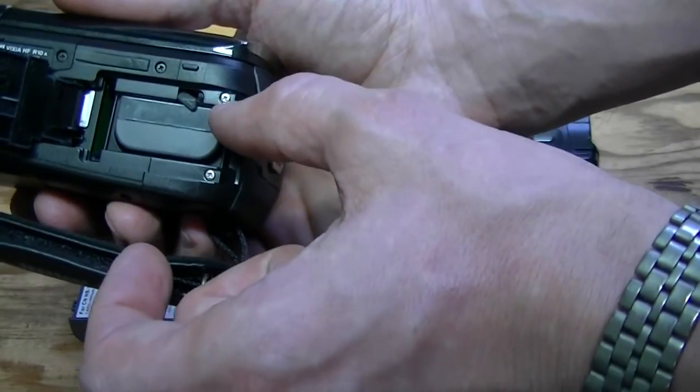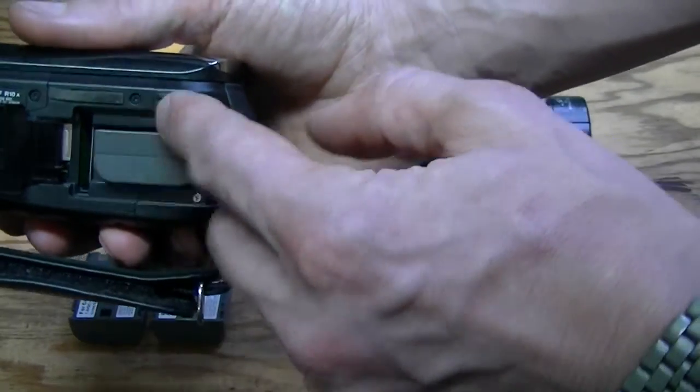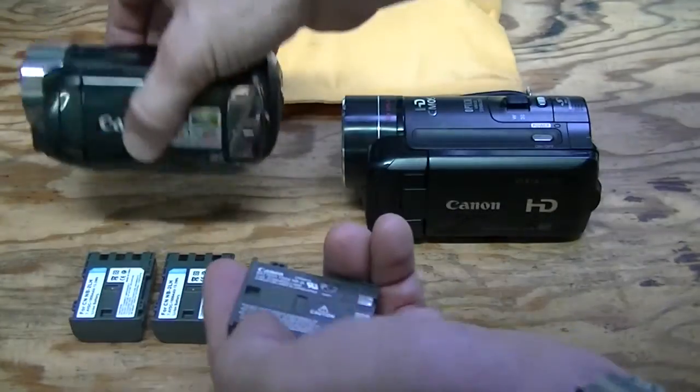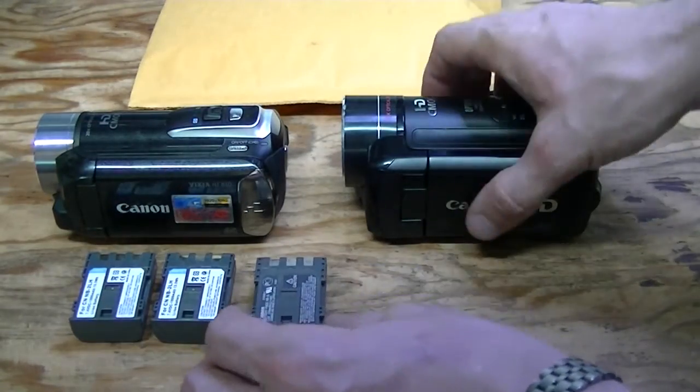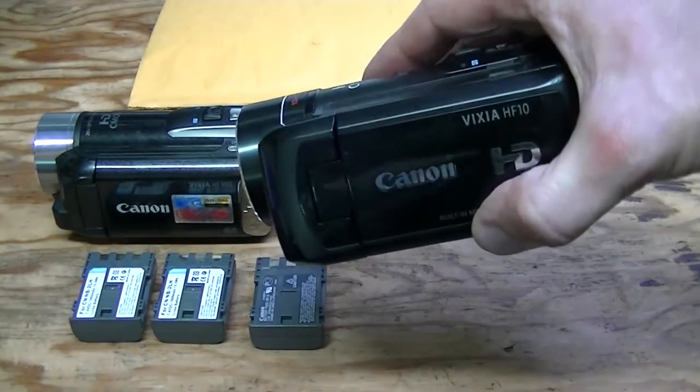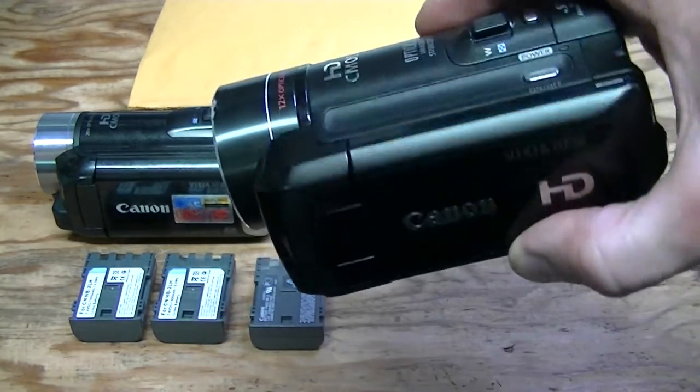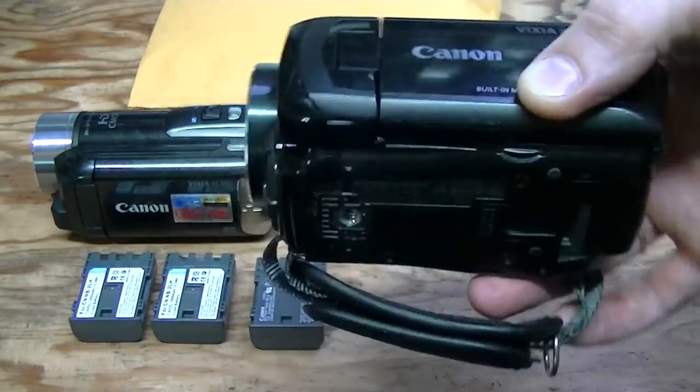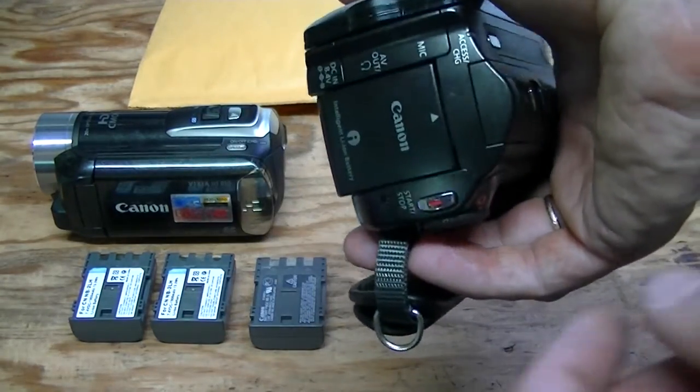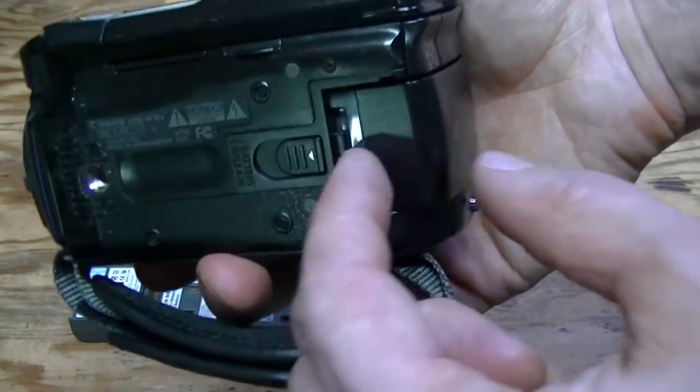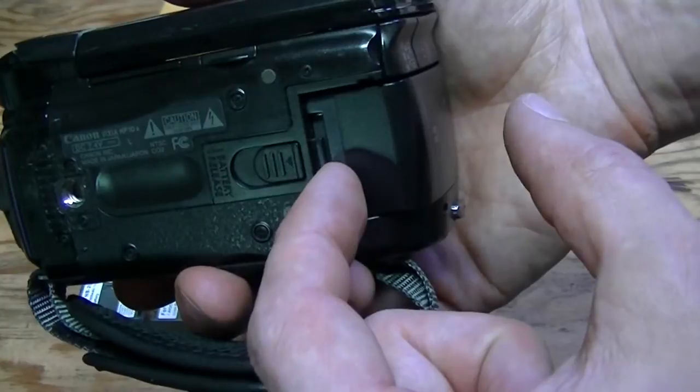There are thicker batteries on the market which will not fit into this guy. So I ended up upgrading the camcorder. I bought another used camcorder on eBay, which is a better model than this one. And the main thing about batteries here is that the battery is on the back and can be physically thicker.